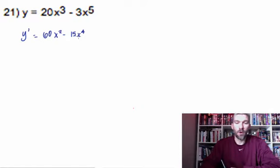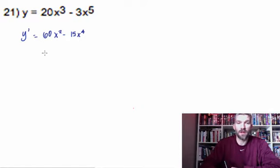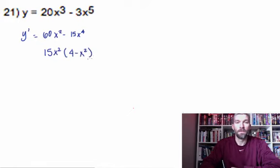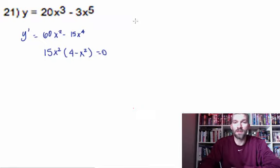Go ahead and solve this for zero. We're going to factor out 15x squared, which gives us 4 minus x squared. Then set each one of those pieces equal to zero. So what we get is 15x squared equals zero and 4 minus x squared equals zero.